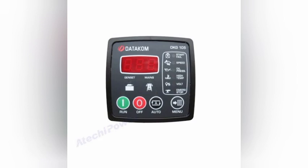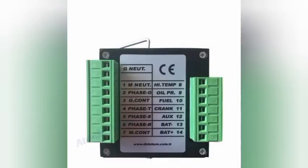Now let's move to the wiring on the back of this controller. You can see the back connector. The first terminal is G Neutral — connect your generator neutral wire here. After that, terminals two, three, and four are for the G contactor — your generator contactor connections. Terminal four onwards includes Phase R, Phase S, and Phase T — that means your R, Y, B phases from the generator, which you connect here.